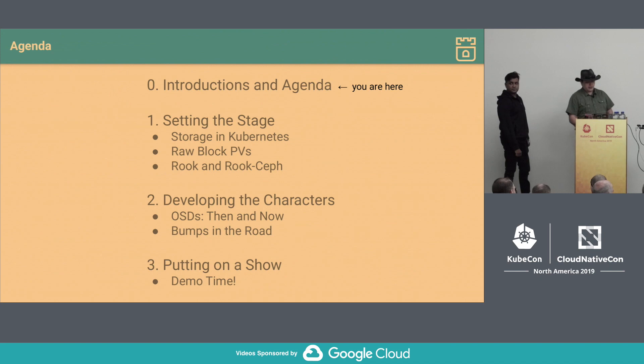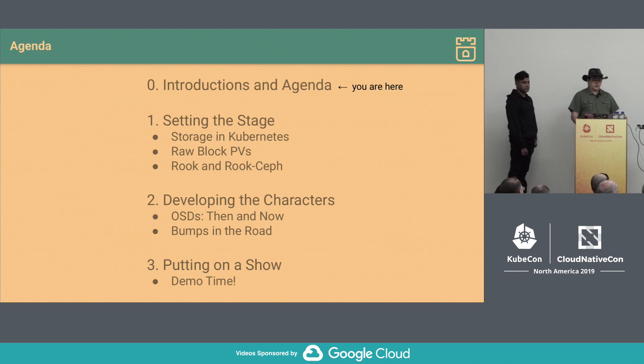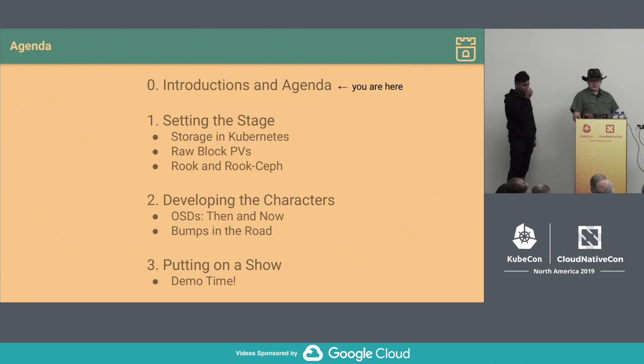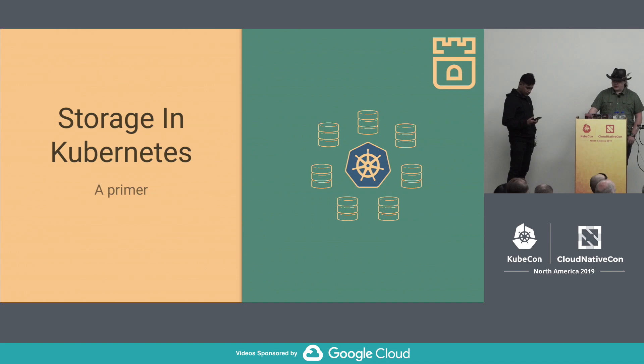Here's a quick overview of what we're going to go through. We're at the agenda right now. We're going to cover some basics of storage in Kubernetes, do a quick overview of raw block PVs, an introduction to Rook and Rook-Ceph, then get into the meat of how OSDs have been provisioned and how they can be provisioned now. And then we'll have a demo at the end.